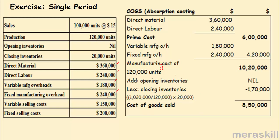There are no opening inventories and there is closing inventory. You know there are 20,000 units, but what is the value of this closing inventory? The cost at which you manufactured during the current period. 1,020,000 is the cost for 120,000 units. Therefore what is the cost for your closing stock of 20,000 units? 1,020,000 divided by 120,000 into 20,000 — closing inventory's value is 170,000. And the cost of goods sold is 850,000 under absorption costing.